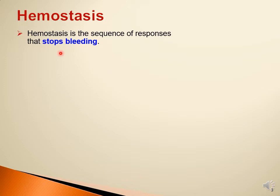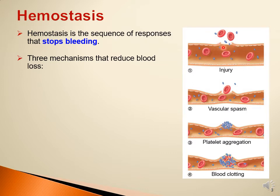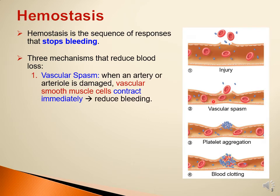Hemostasis is the sequence of responses that stop bleeding or blood loss from a blood vessel. There are three mechanisms that reduce blood loss. After injury to a blood vessel — for example due to trauma — the first mechanism is vascular spasm: contraction of the circular smooth muscle cells in the blood vessel wall. This reduces the diameter of the blood vessel and reduces blood flow through the damaged area.